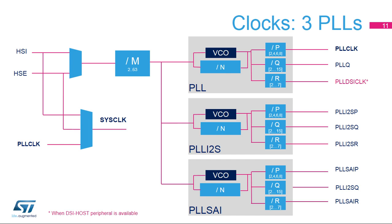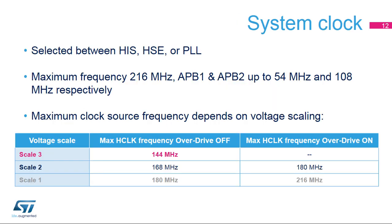STM32F7 devices embed three phase-locked loops, each with three independent outputs. The input clock of the PLL can be selected between HSI and HSE. The main PLL can provide the system clock. The different PLL outputs can be used for the serial audio interfaces, USB, random number generator, SDMMC peripherals, and LTDC and DSI host interfaces when available. The system clock is selected between the HSI, HSE, and PLL output.